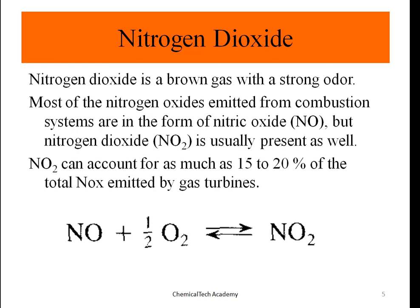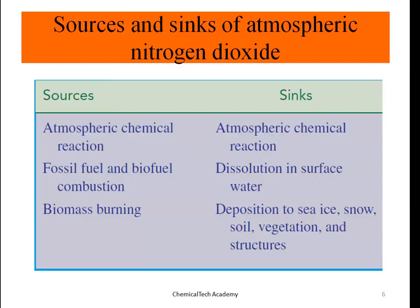NO plus one-half O₂ produces nitrogen dioxide. The sources of atmospheric NO₂ include atmospheric chemical reactions, fossil fuel and biofuel combustion, and biomass burning.